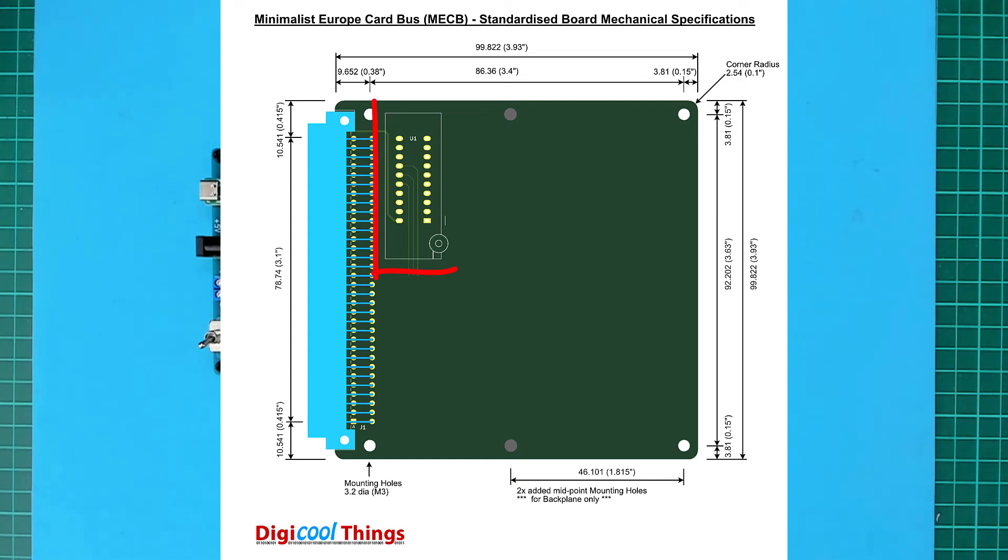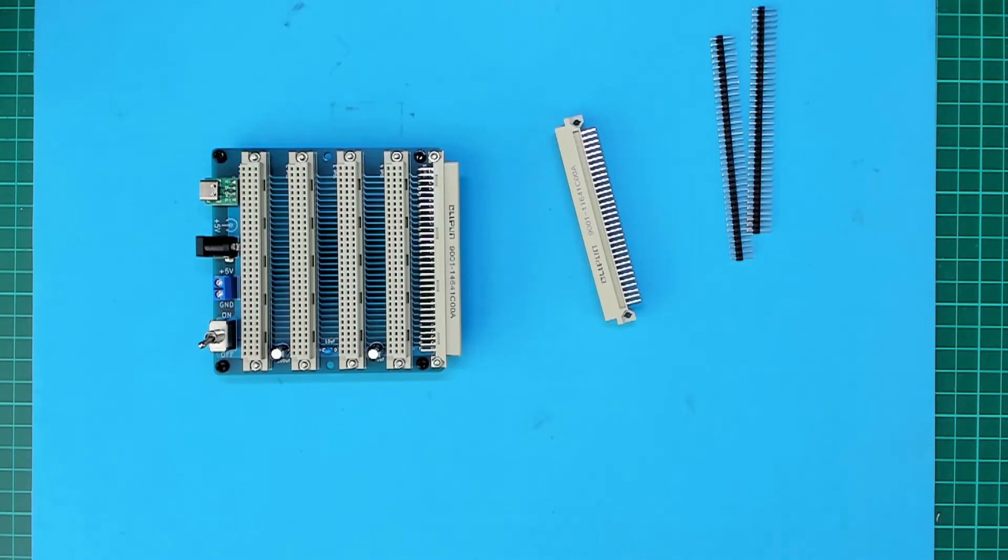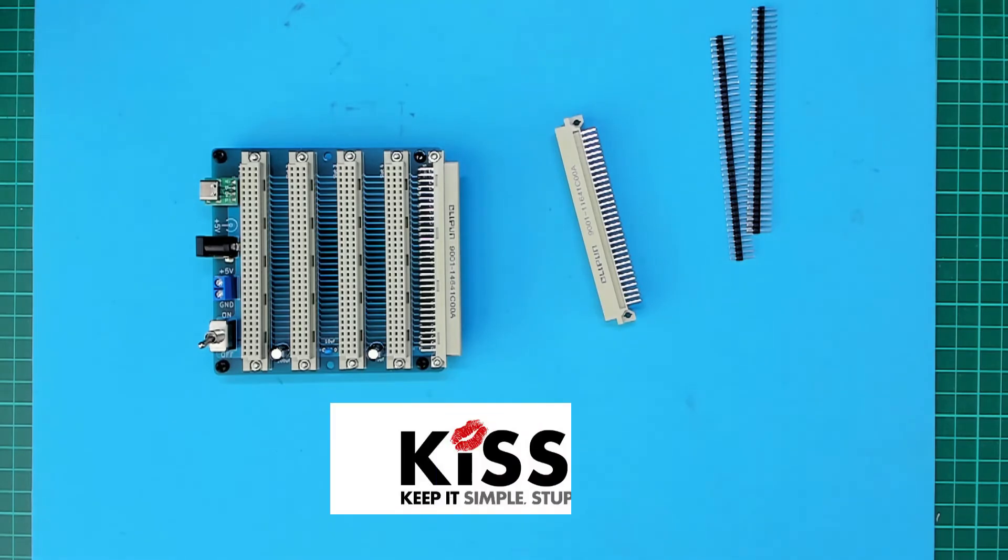There was an initial thought that I'd keep the ATF 16v8 address decoding glue logic PLD that I'd included in the KiCAD template. However, I decided to follow the KISS principle and keep it simple for the first prototype card design.